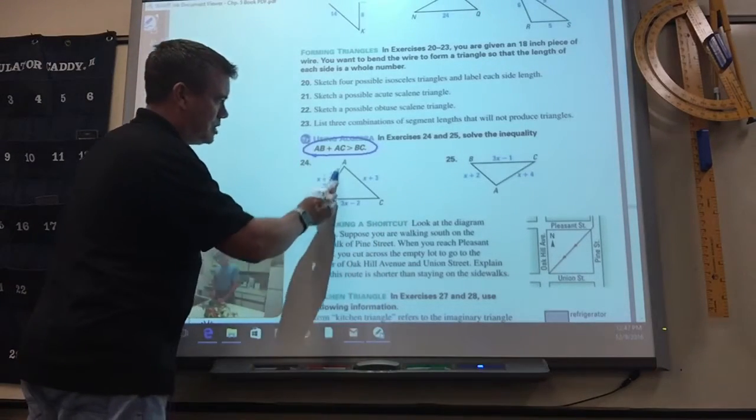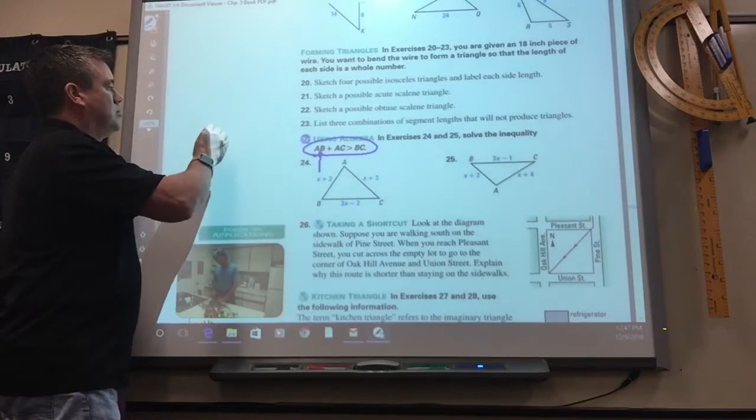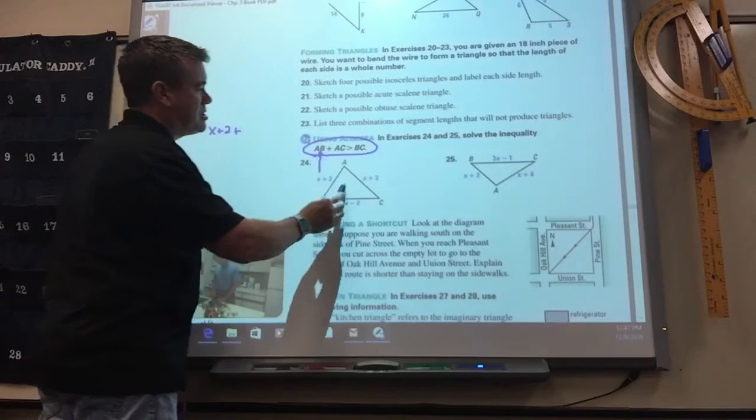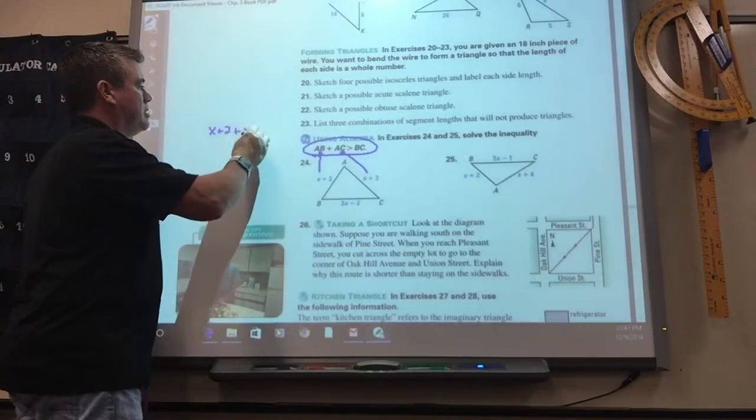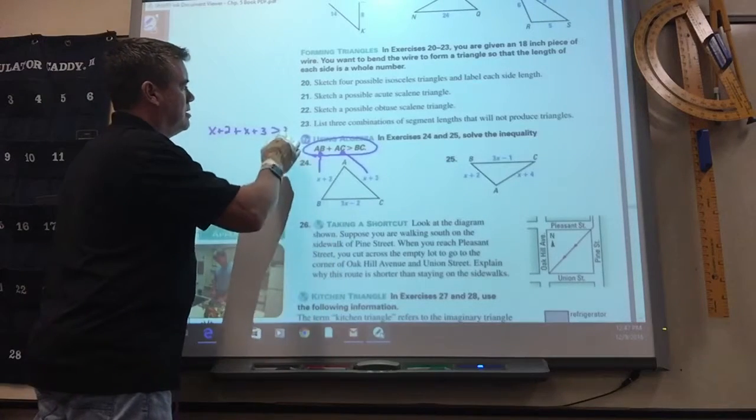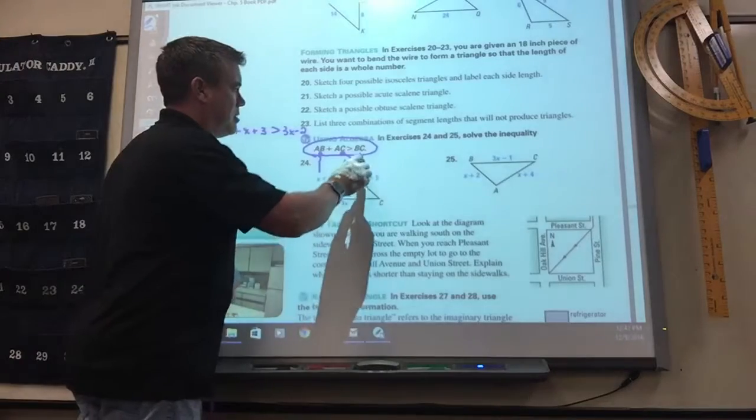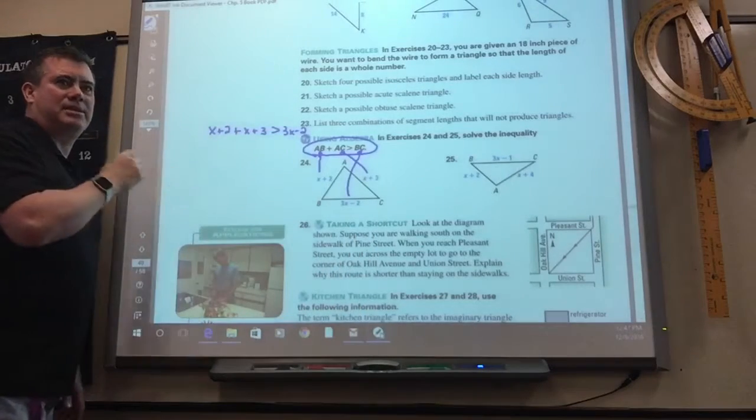You take AB, which is x plus 2, plus AC, which is x plus 3, and set it greater than BC, 3x minus 2. So you just plug these in for that, and then you simplify that, get the x by itself.